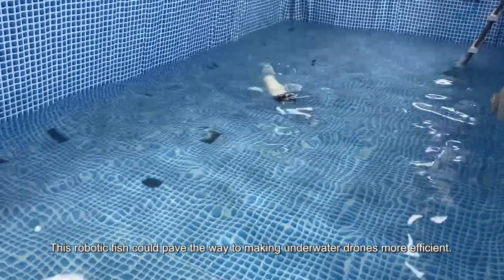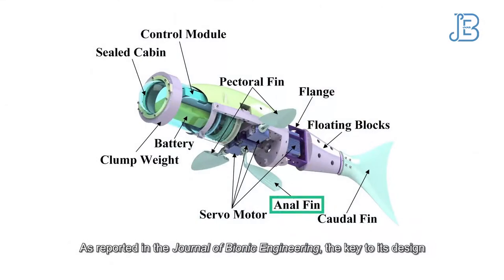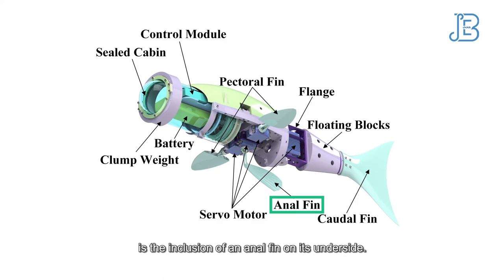This robotic fish could pave the way to making underwater drones more efficient. As reported in the Journal of Bionic Engineering, the key to its design is the inclusion of an anal fin on its underside.